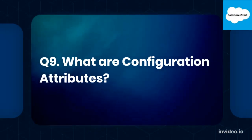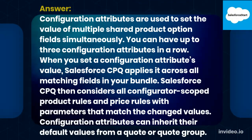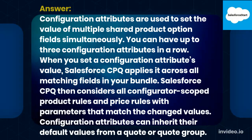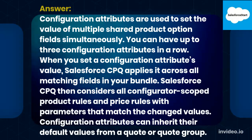Q9. What are Configuration Attributes? Answer. Configuration Attributes are used to set the value of multiple shared product option fields simultaneously. You can have up to three configuration attributes in a row. When you set a configuration attribute's value, Salesforce CPQ applies it across all matching fields in your bundle. Salesforce CPQ then considers all configurator-scoped product rules and price rules with parameters that match the changed values. Configuration attributes can inherit their default values from a quote or quote group.